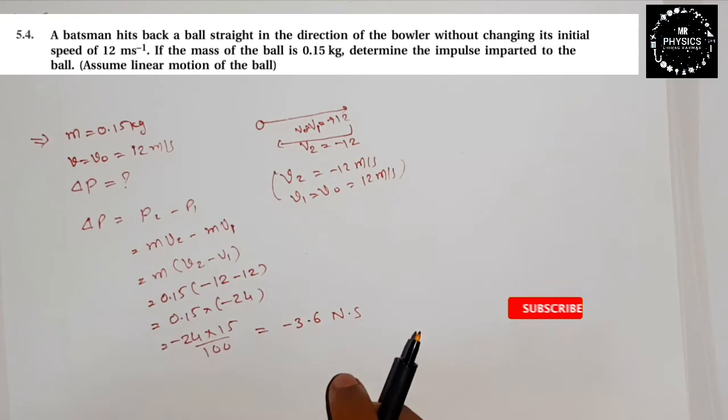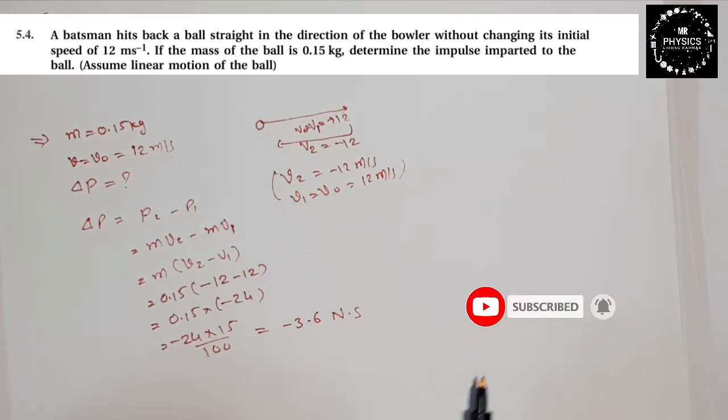The impulse is from batsman to the bowler, which is the opposite direction. The negative sign shows that the impulse is from batsman to the bowler. Thank you, take care.